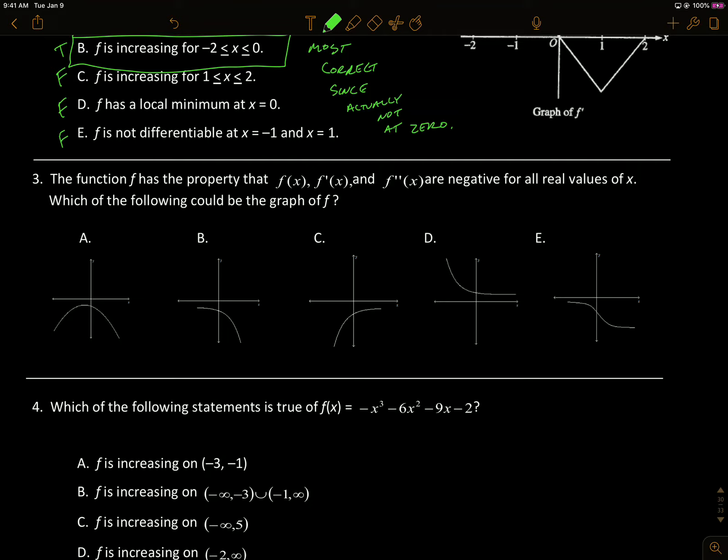We're going to say that A cannot be the graph because on this section right here, the function is increasing, which means f prime would be positive there.